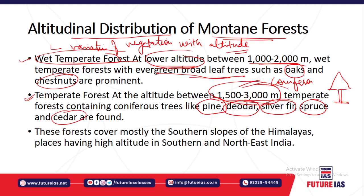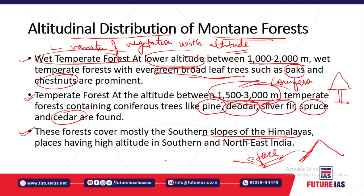Trees like pine, deodar, silver fir, spruce, and cedar are some of the temperate coniferous forests found there. These temperate forests are found on the southern slopes of the Himalayas because of the evident sunshine available on the southern face of the Himalayas.